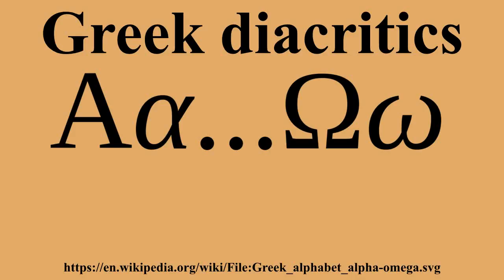The koronis marks a vowel contracted by crasis. It was formerly an apostrophe placed after the contracted vowel, but is now placed over the vowel and is identical to the smooth breathing. Unlike the smooth breathing, it often occurs inside a word.